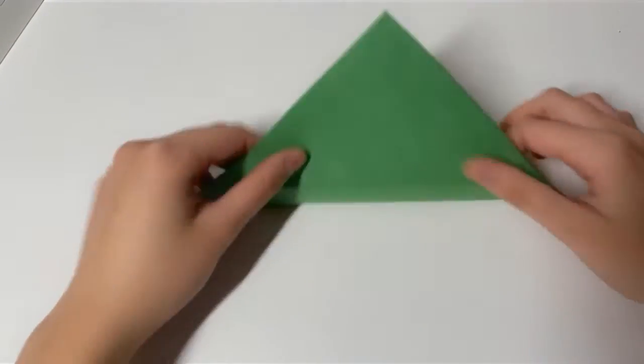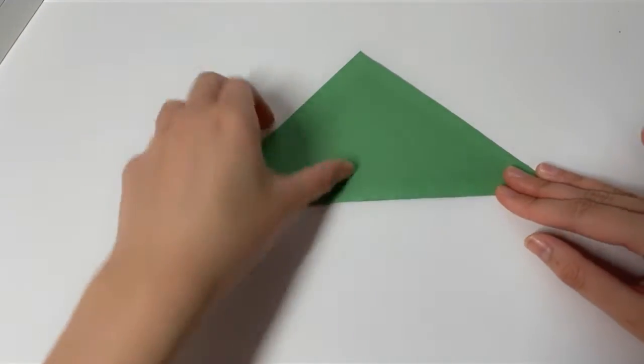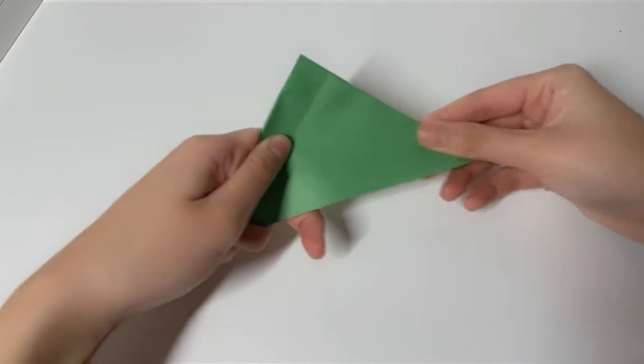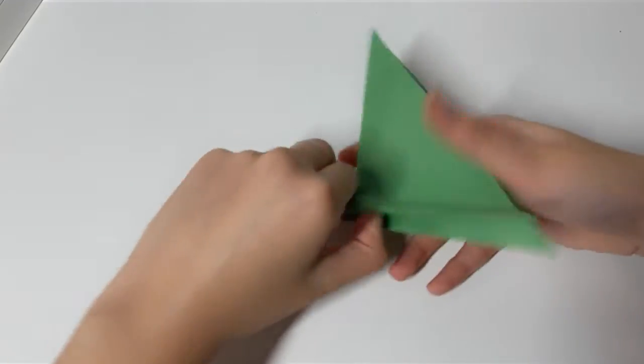and you're going to take one origami paper and fold it in half to make this triangle. You're going to fold it in half the other way to make an even smaller triangle.